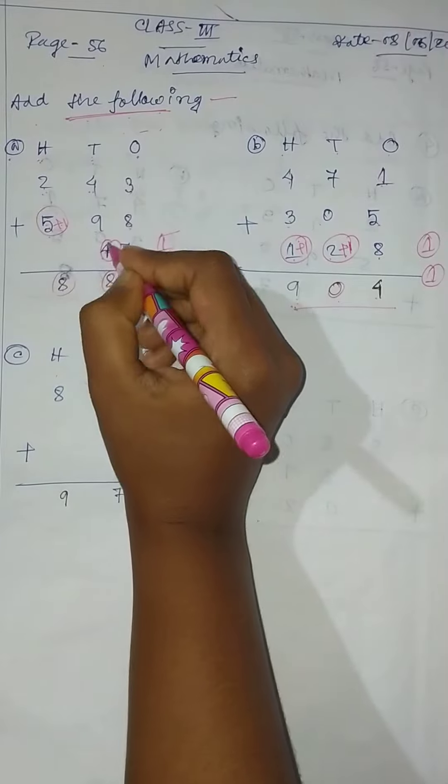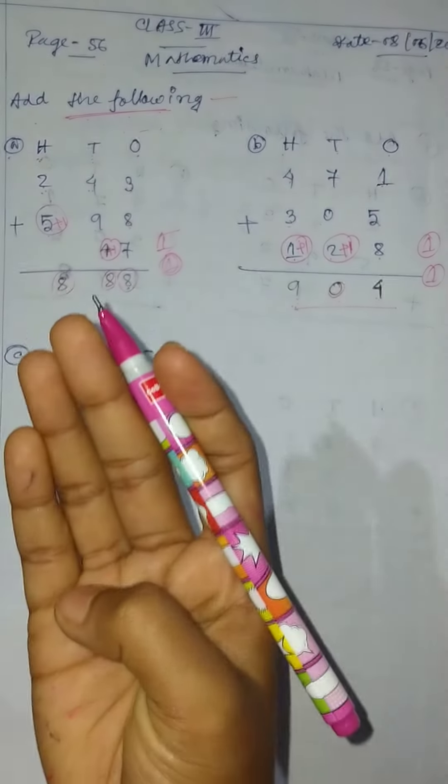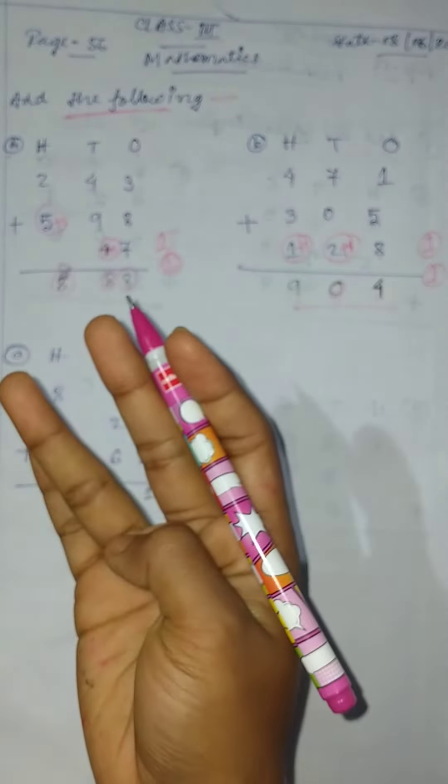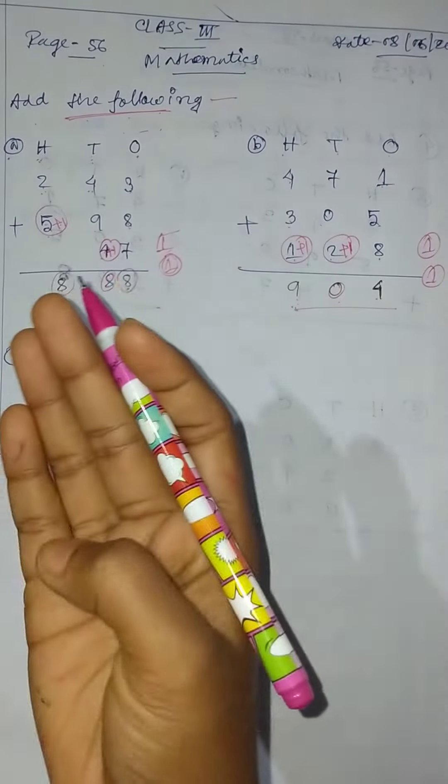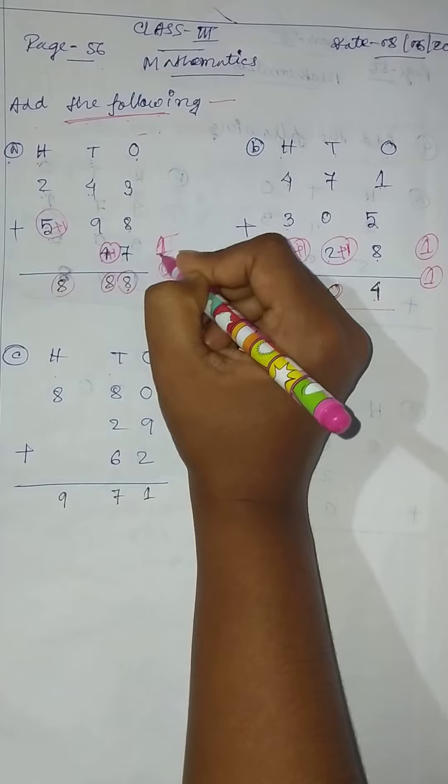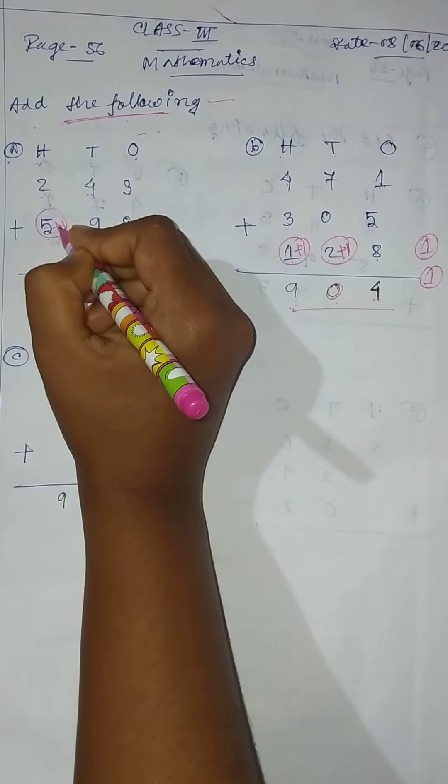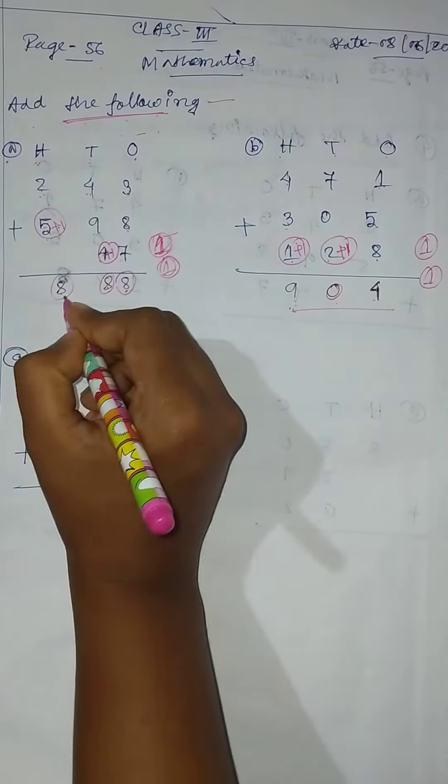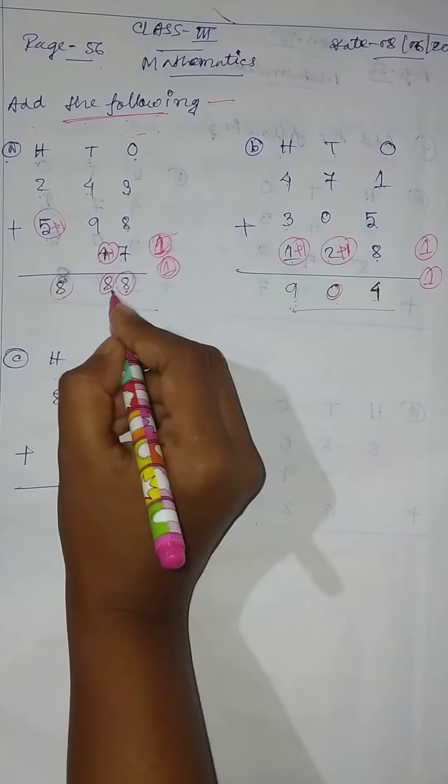4 plus 1 equal to 5. 9 plus 5 equals 14. 14 plus 4 equals 18. 18, write 8 and 1 carry. 5 plus 1 equal to 6, 6 plus 2 equal to 8, so answer 888.